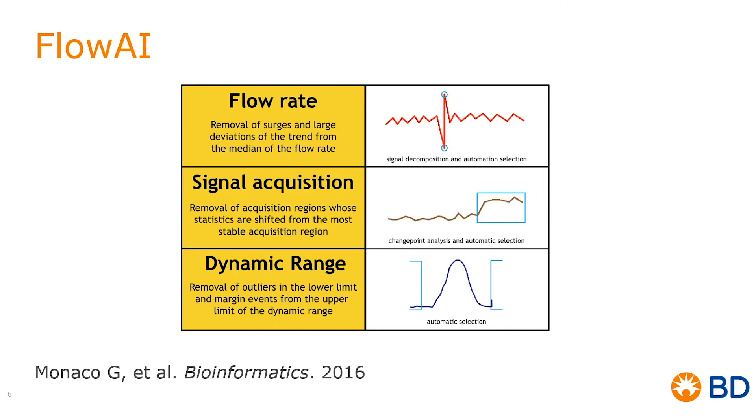Last would be FlowAI. FlowAI is another one of our plugins. This one's very popular with flow cytometry users. This was also published in 2016 in Bioinformatics, and what it does, it checks for three major things. One, flow rate, two, signal acquisition, and three, your dynamic range. As you can see for both plugins, I have listed the reference in case you would like to go back and read more into detail on each of the plugins.